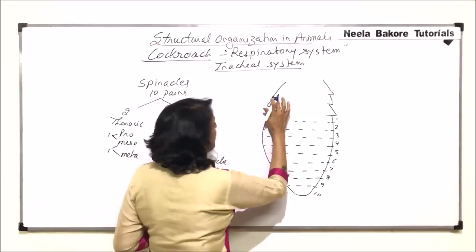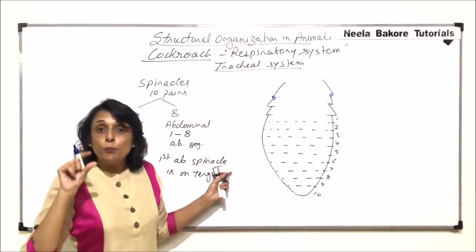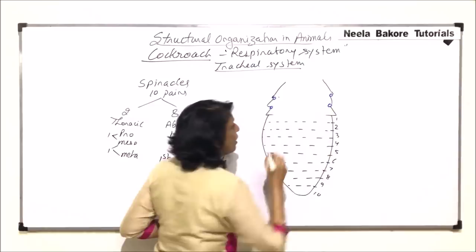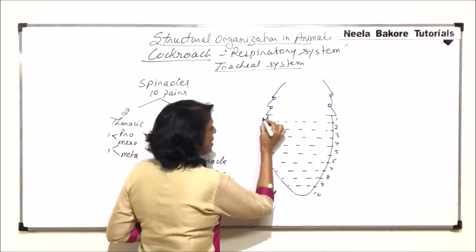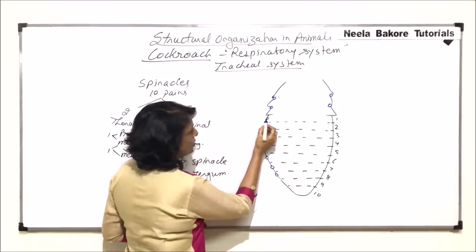The first thoracic opening is between pro and mesothorax — at that junction we find this opening, and these openings are on the pleural membrane. The same is the case with the second pair, which is at the junction of meso and metathorax. In the abdominal region, all abdominal spiracles are within the segment, not between the segments.